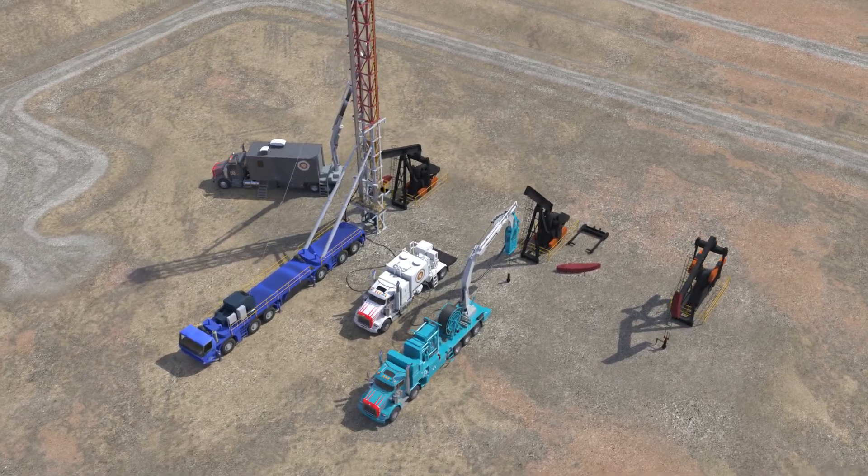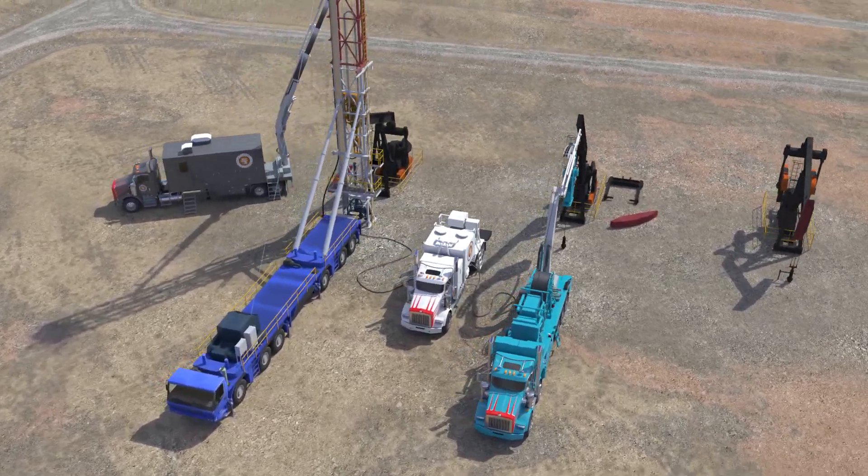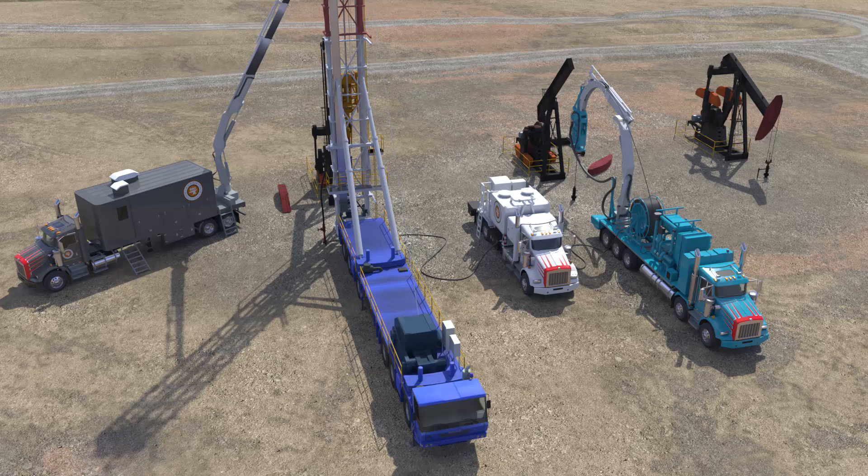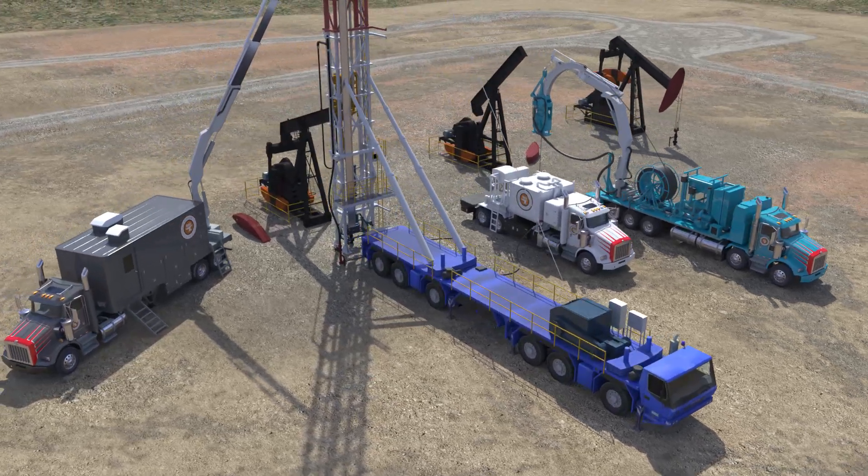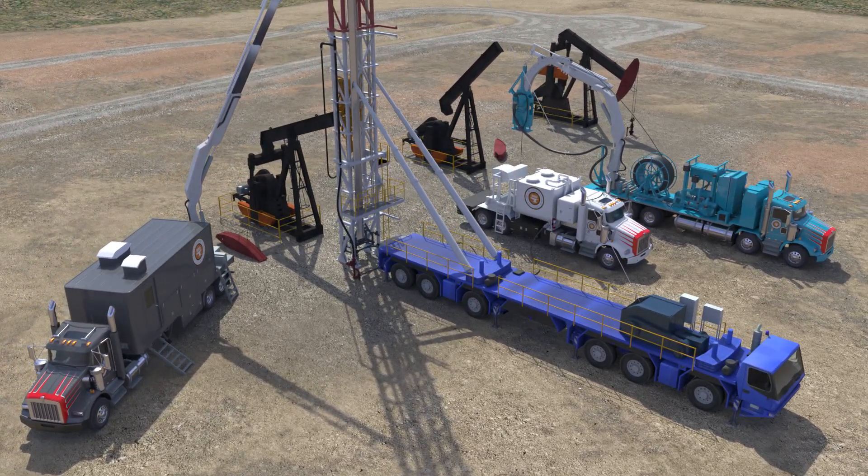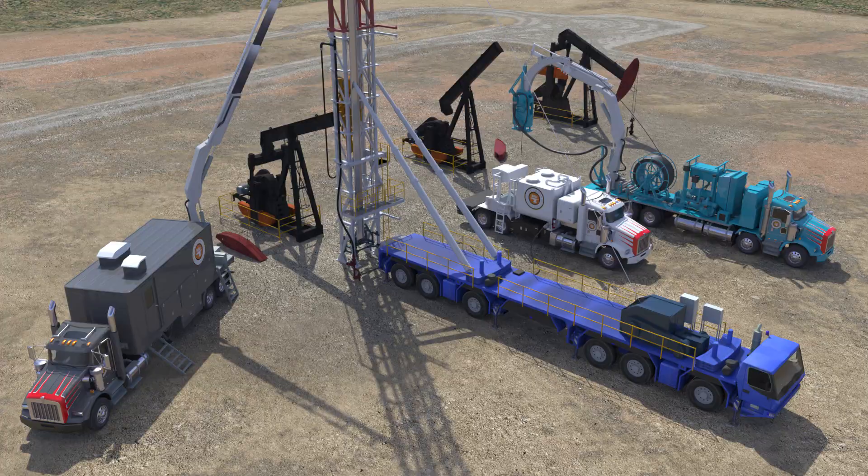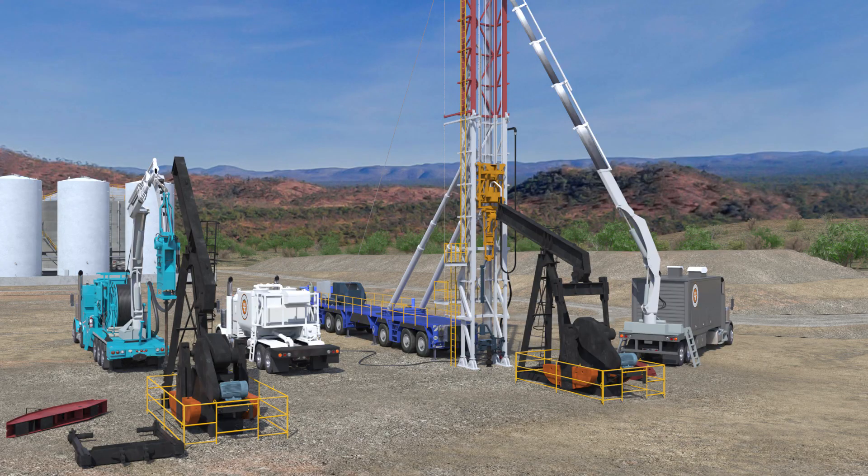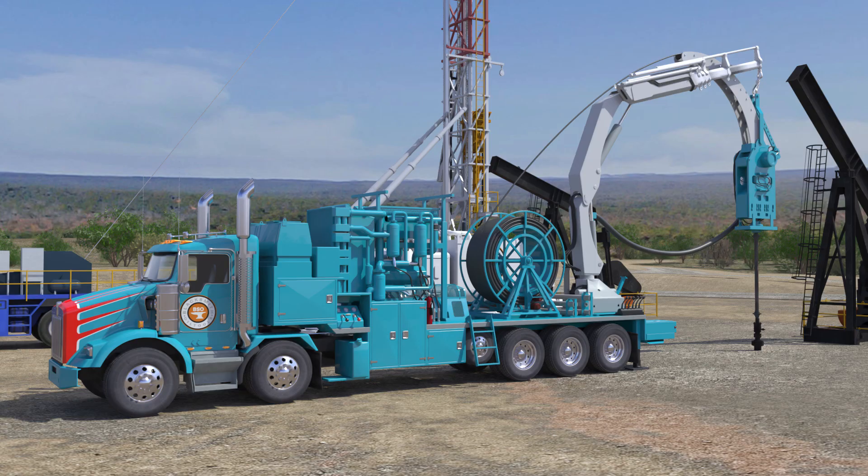Plugging wells can be a costly and time-consuming endeavor for the operator, as most wells need a combination of downhole tools and cement to be deployed down the well. To do so, different types of equipment need to be utilized such as a work-over rig, wireline unit, and coiled tubing unit.